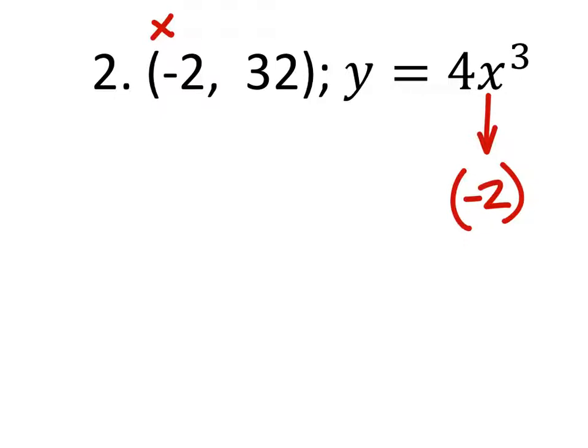Alright? And then my y value is this 32, so I've got to replace y with 32. This equals 4 times that negative 2 to the power of 3.